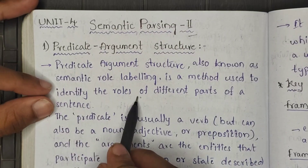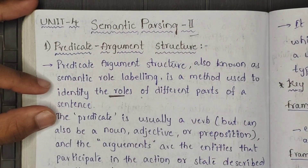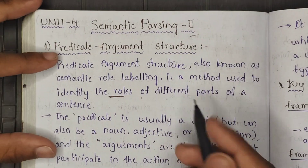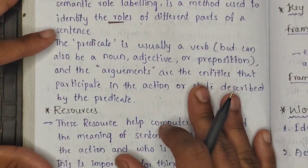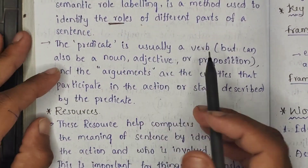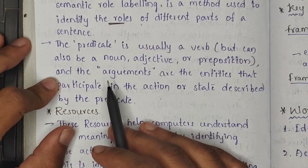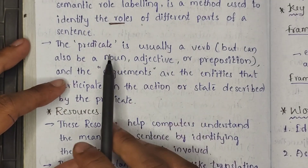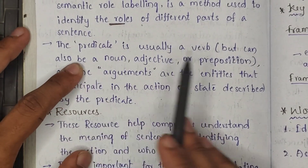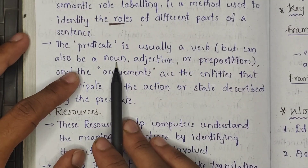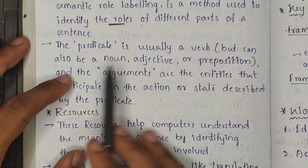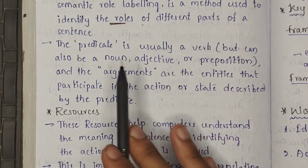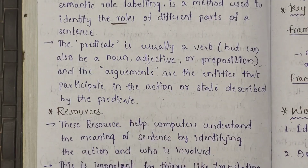This method is used to identify the roles of different words in a sentence — the roles that each word plays as part of the sentence. The predicate is actually a verb. Predicate is a verb, but it can also be a noun, adjective, or preposition. So a verb is not limited to just verbs; it can be associated with nouns, adjectives, and prepositions. That is what constitutes a predicate.